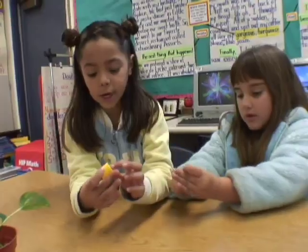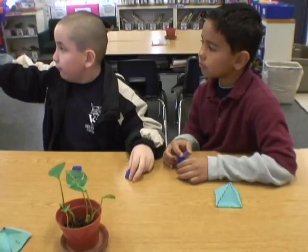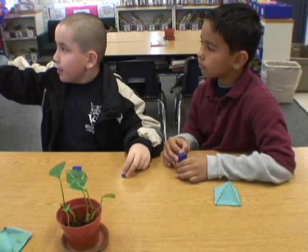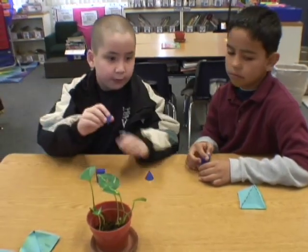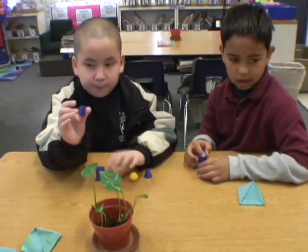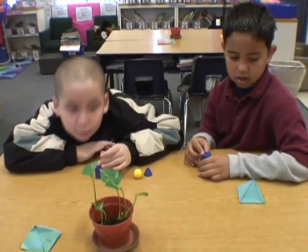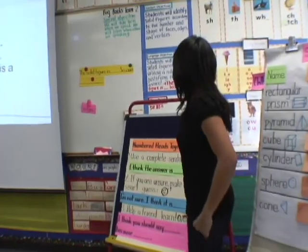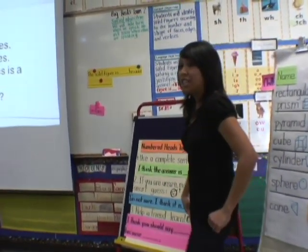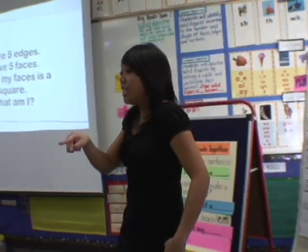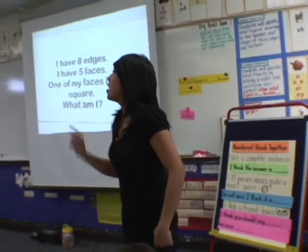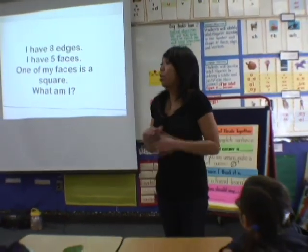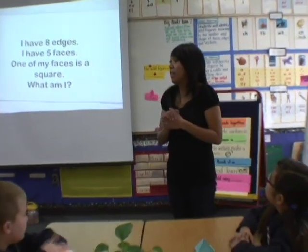Let's count each one again and check our answers. One of my faces is a square — it's hard to trick you! Remember, with our numbered heads together strategy, each team is assigned a number and each individual person is also assigned a number.